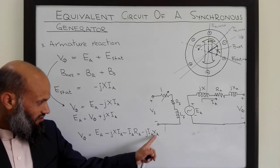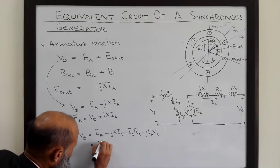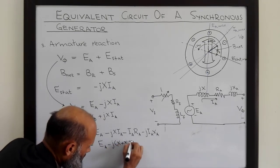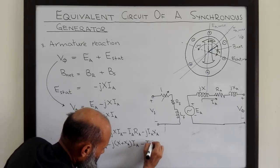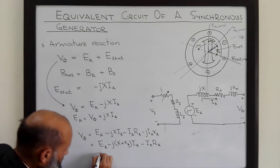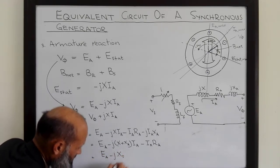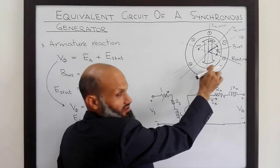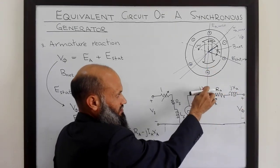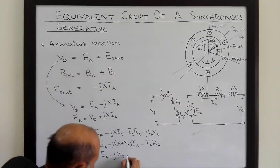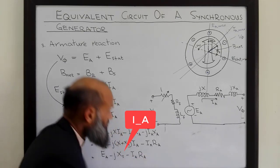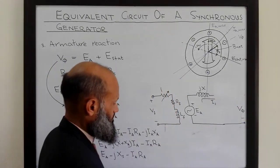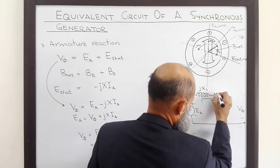These two inductive reactances, XA and X, can be lumped together. They are named XS — the synchronous reactance. The synchronous reactance includes the self-inductance of the coils and the inductance which incorporates the effect of armature reaction. So the final expression is: Ea = V_phase + jXS·Ia + Ia·RA, where XS = X + XA. The complete equivalent circuit has the voltage source Ea, the synchronous reactance jXS, and the armature resistance RA in series.